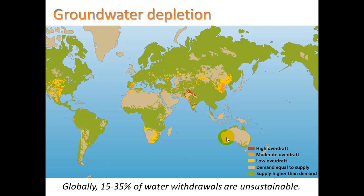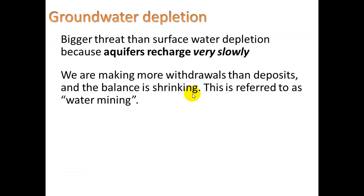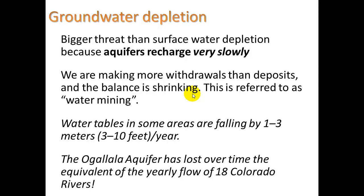Groundwater depletion is a big problem in the Middle East as they try to do irrigation for a large, growing population. Groundwater depletion is a bigger threat than surface water depletion because aquifers recharge very slowly — water moves through porous rock at a really slow rate. We are making more withdrawals than deposits and the balance is shrinking. This is referred to as water mining or over-drafting, and in some areas the water table is falling by one to three meters — three to ten feet — per year.